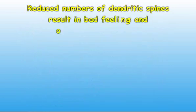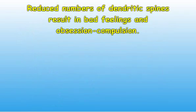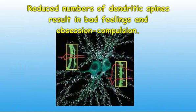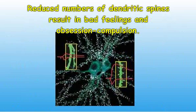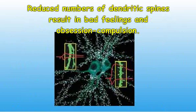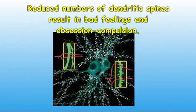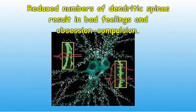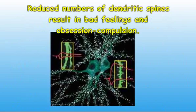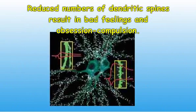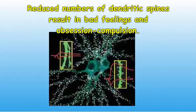Reduced numbers of dendritic spines result in reduced firing rates or electrical activity of the dendrites. This is correlated with the development of feel-bad or negative feelings of resentment, self-pity, fear, and dishonesty. There is often associated obsessive-compulsive behavior.